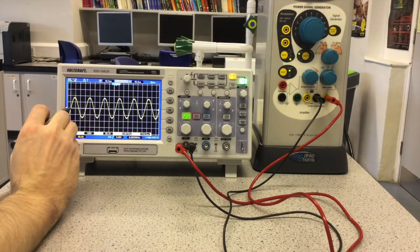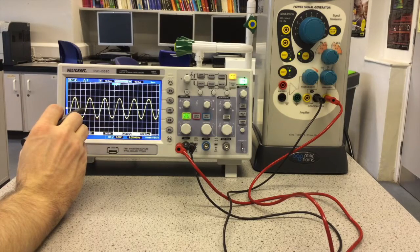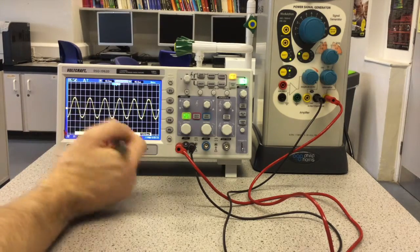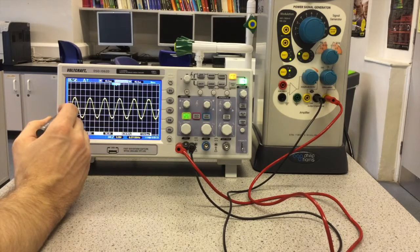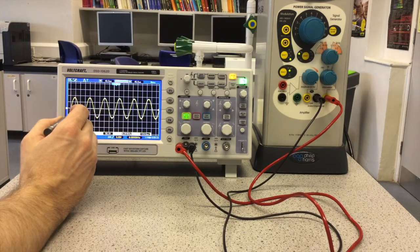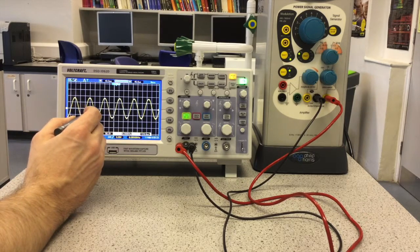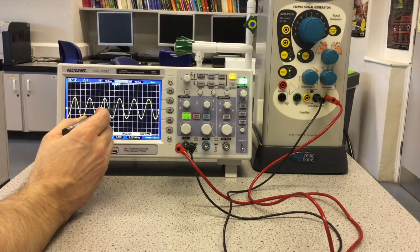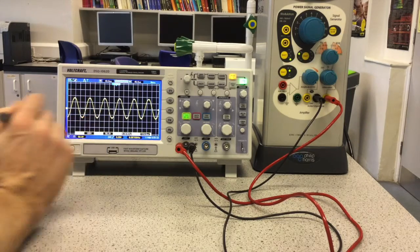And then count how many divisions for three complete cycles. You could count for more cycles to be more accurate, I'll just do three in this case. So that's three squares, three there, it's nine squares, it's 9.4.